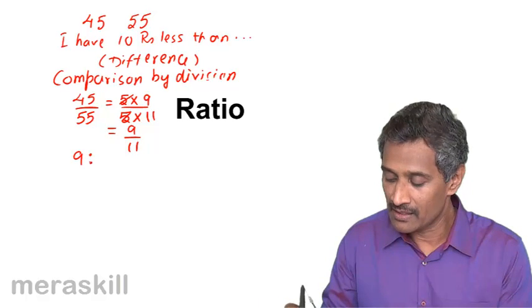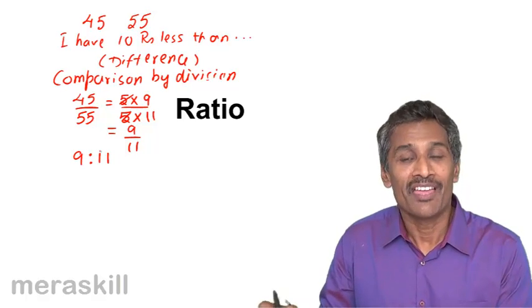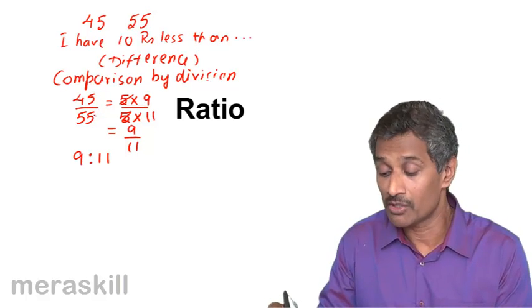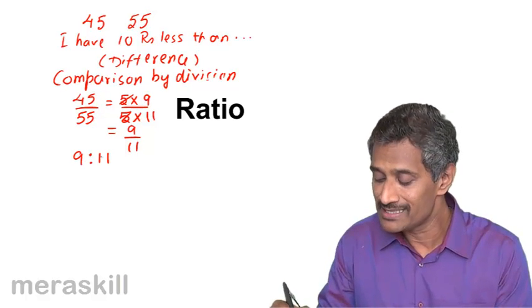We even write it as 9 is to 11, which means that the ratio of the amount of money that I have and the amount of money that my son has is 9 is to 11.